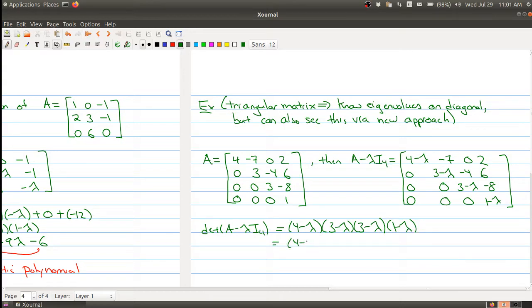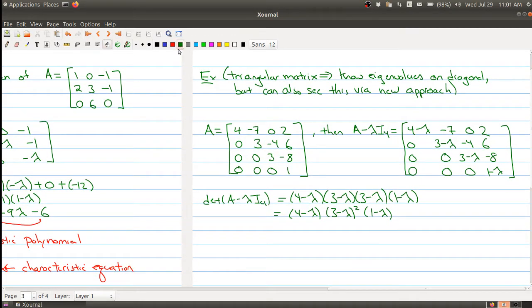And I'm just going to clean it up a little bit because I'm going to use this in a second. So notice that I have 3 minus lambda twice. So I'm writing just 3 minus lambda squared. And so what we get here is that the eigenvalues are lambda equals 4, 3, and 1, which is exactly what we talked about last class, that the eigenvalues are the entries on the diagonal entry.